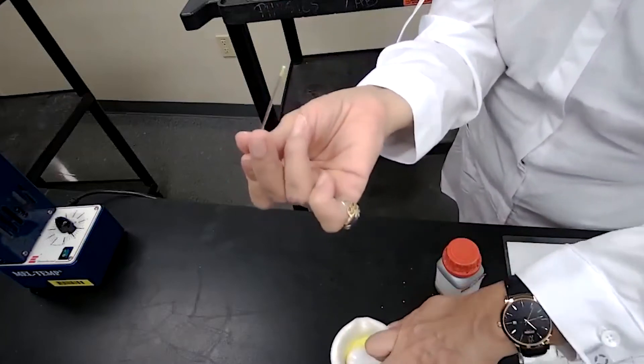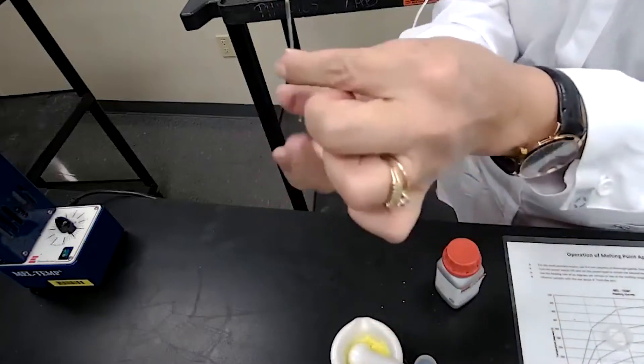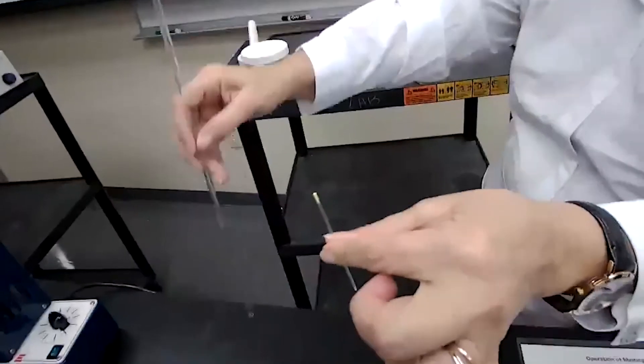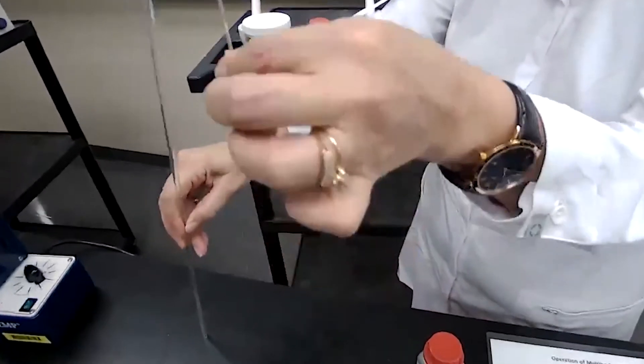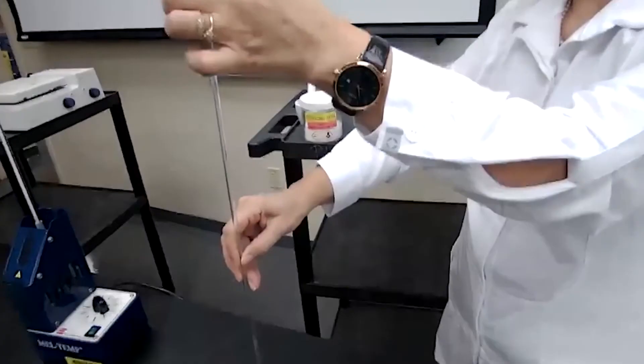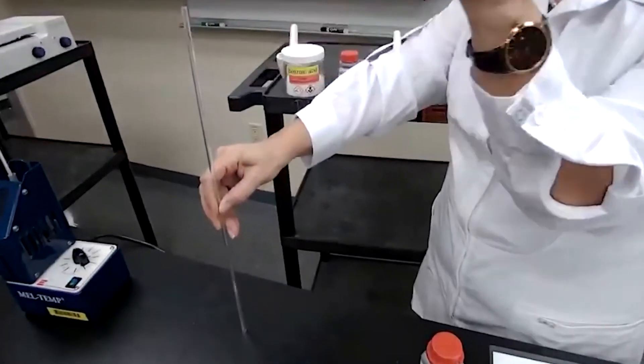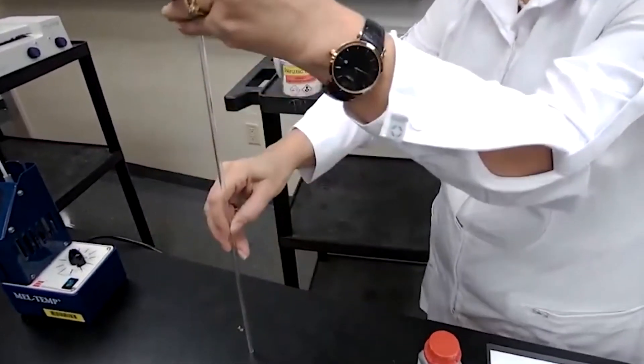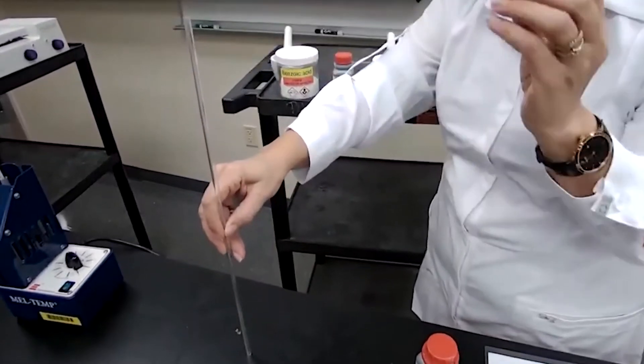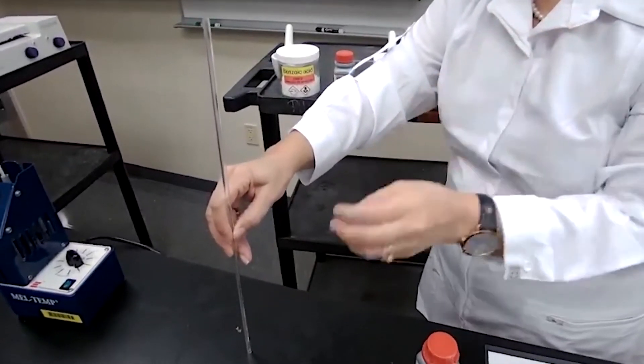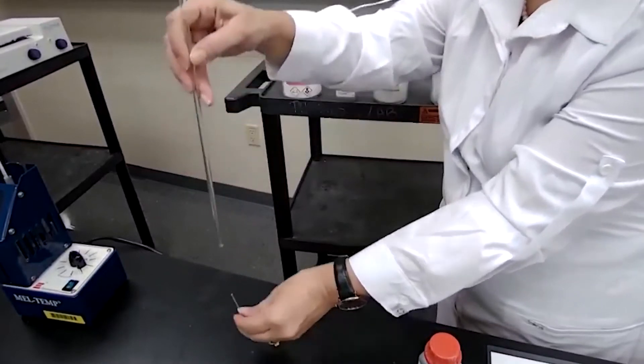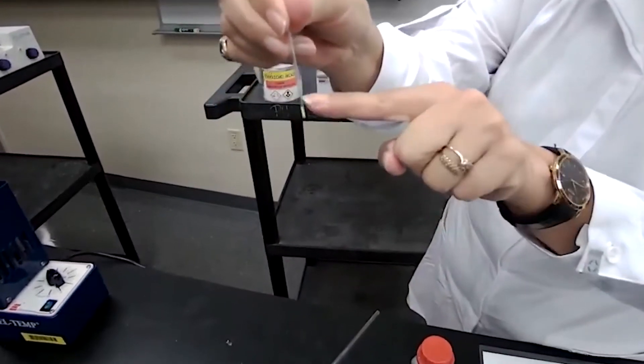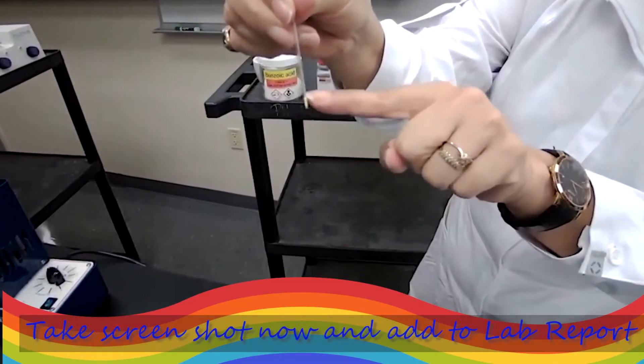Now we need to transfer the sample from the tip of capillary tube to the bottom of capillary tube. To do that, I'm going to use a hollow glass tube and drop the capillary tube through that hollow glass tube. Do that a couple of times and make sure the sample is all the way down and properly packed.